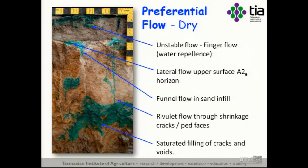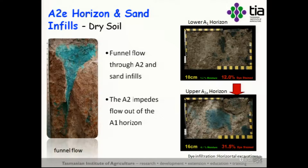In the A2 horizon — that sandy layer — a remarkable thing happens. These A2s are bleached and sandy, like going to the beach. Yet a finger coming through the A horizon hits the top of the A2 and spreads out, because it has significantly lower hydraulic conductivity than the A1 above it — the opposite of what we think. This layer is commonly cited to be the hydraulic conduit in these soils. We also get this deep funneling where sand infills form.